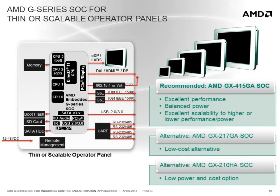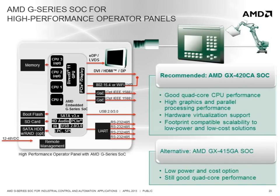For OEMs that offer scalable Operator Panel portfolios, the GX415GA is the recommended solution, offering excellent graphics performance while still consuming moderate power. With footprint compatibility to the other SOCs in the G-Series family, OEMs can select lower cost or power options to easily scale to smaller display sizes. For automation panels that are becoming more popular and leverage virtualization to integrate visualization with motion control, the GX420CA delivers good quad-core x86 CPU performance along with a very high performance graphics engine for a combination of graphics and compute. OEMs that want to scale the solution down can leverage the GX415GA as a lower power and cost option.